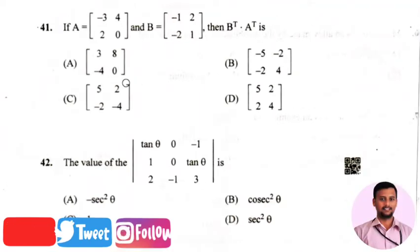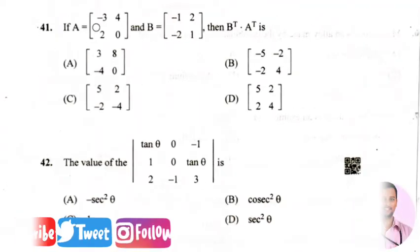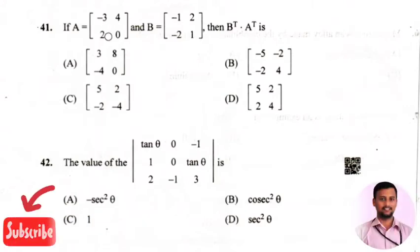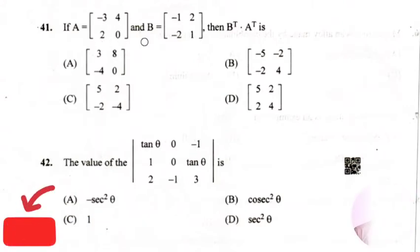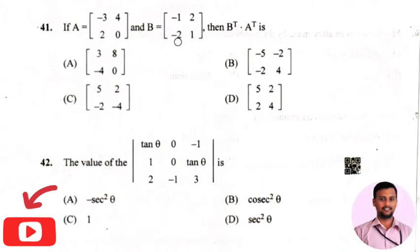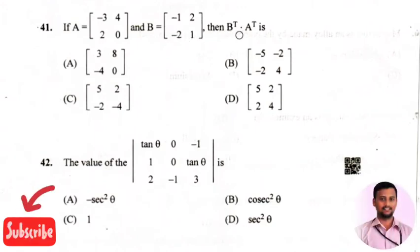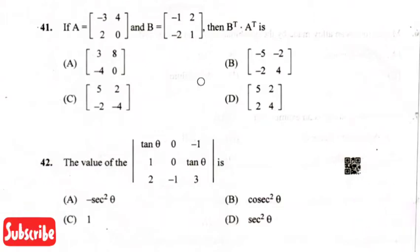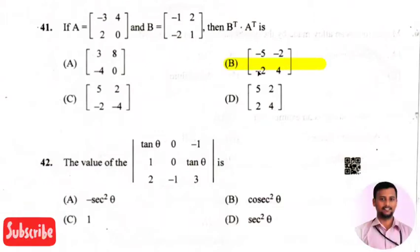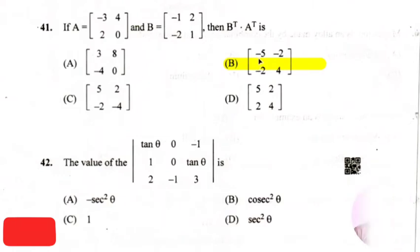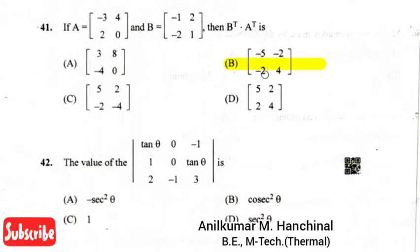The first question in the mathematics section is: if matrix A equals minus three, four, two, zero and matrix B equals minus one, two, minus two, one, then B transpose into A transpose is — the right answer is option two, that is minus five, minus two, minus two, four.